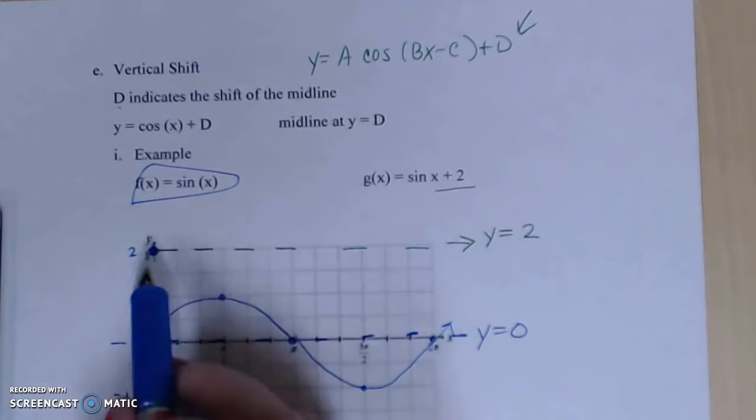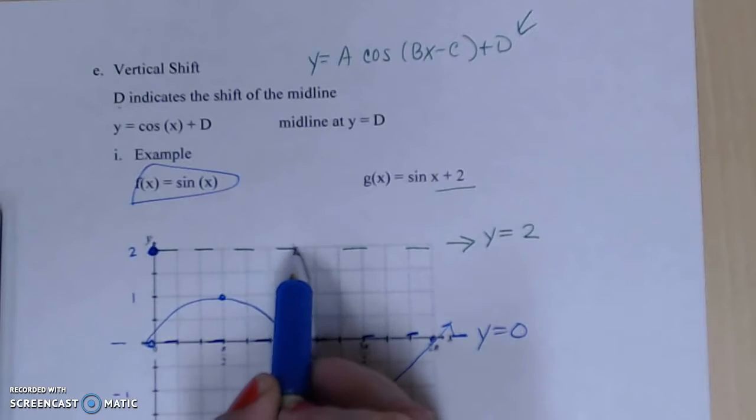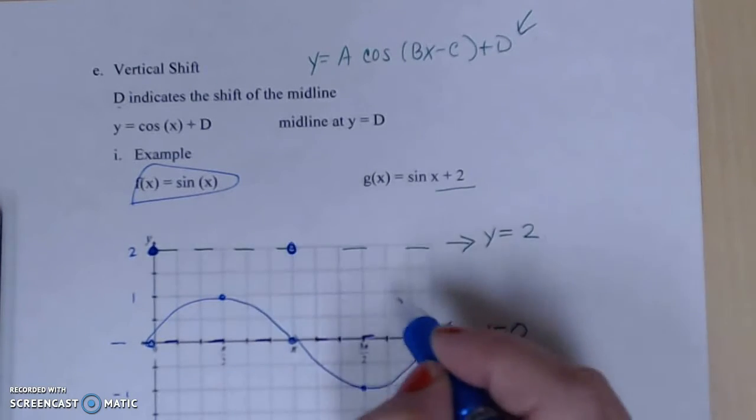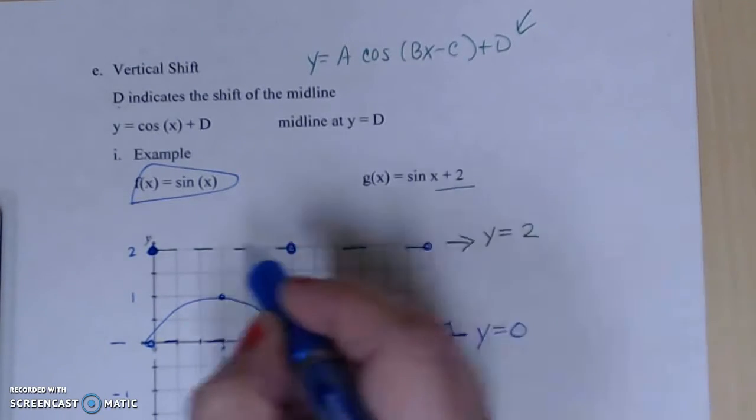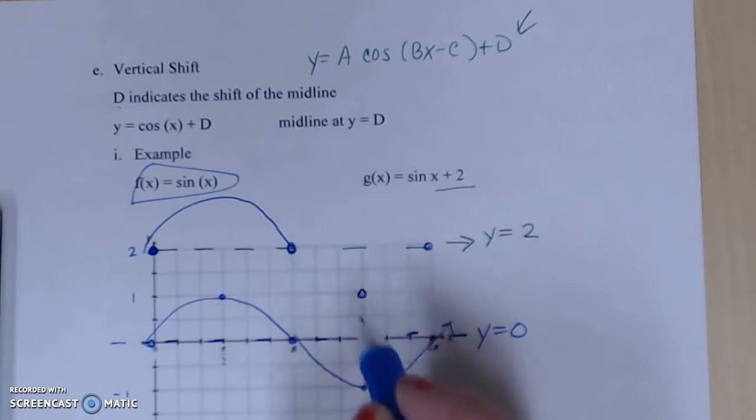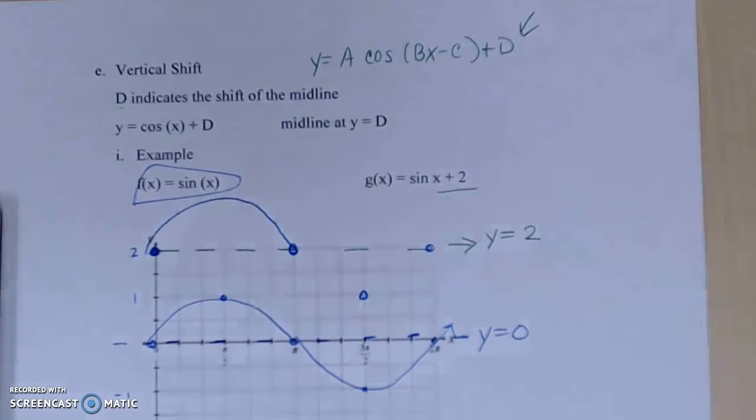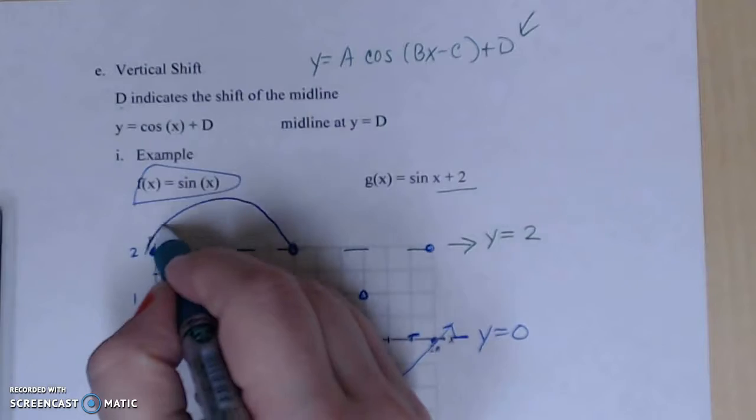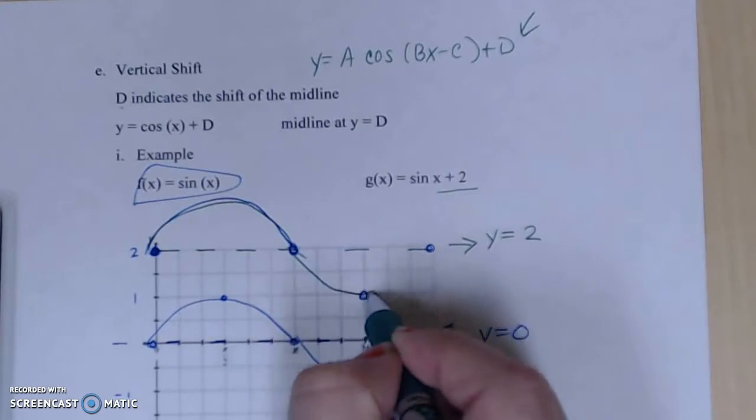We're going to go up, we're going to come down. And so we get a graph – change pins too soon – something like this.